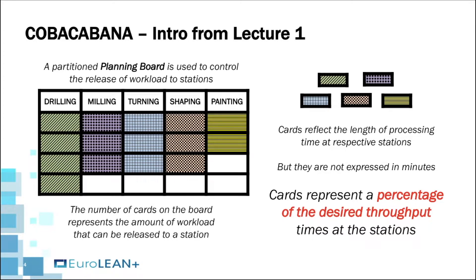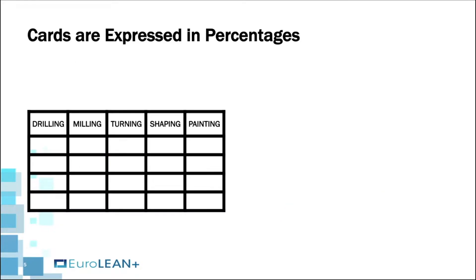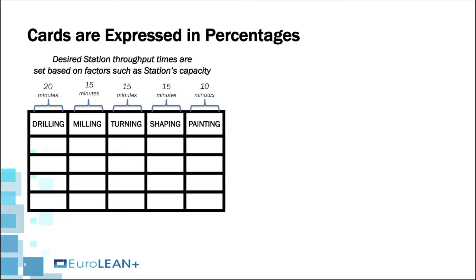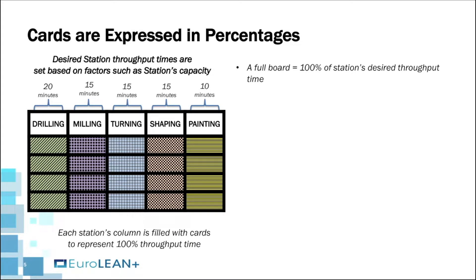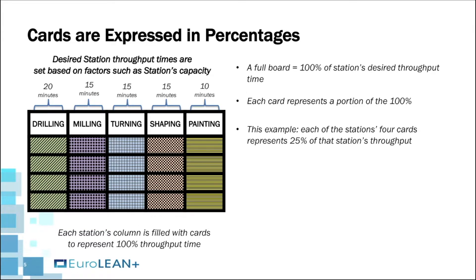Because stations' throughput times determine how long it takes to process orders in the system, we wish to control them to have a predictable overall system throughput time and delivery for orders. The desired throughput times for stations are set based on factors such as their capacity. A full board represents 100% of the workstation's desired throughput time, and each card represents a portion of that 100%. In this illustration, each of the station's four cards represents 25%, so each card attached to release an order increases the station's throughput time by 25% of the desired maximum.